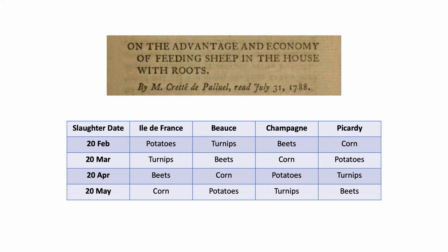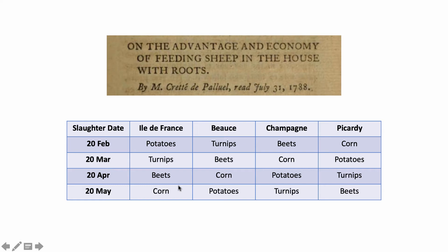Crite wanted to test the effect of diet on the weight of sheep. In winter months, sheep were traditionally housed indoors and fed corn, one of the more expensive grains. He wanted to test whether sheep would fatten at the same rate on a different, cheaper diet. Without explicitly calling it a Latin square design in his paper, he ended up being the first person to publish one, performing a 4x4 Latin square design on his experiment with three variables.